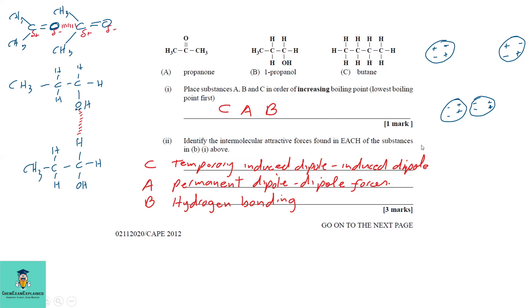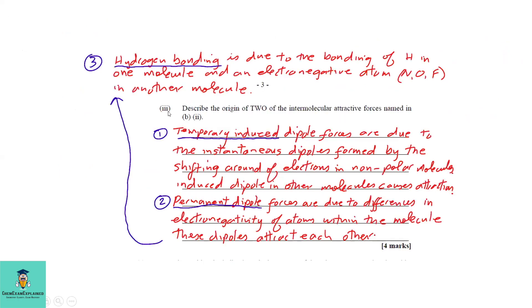For butane, the temporary induced dipole-dipole force (van der Waals forces): when molecules are far apart, electrons are evenly distributed. Once molecules move close to each other without touching, an attraction forms due to a temporary polar bond. Once the molecules move away again, electrons become evenly distributed once more.